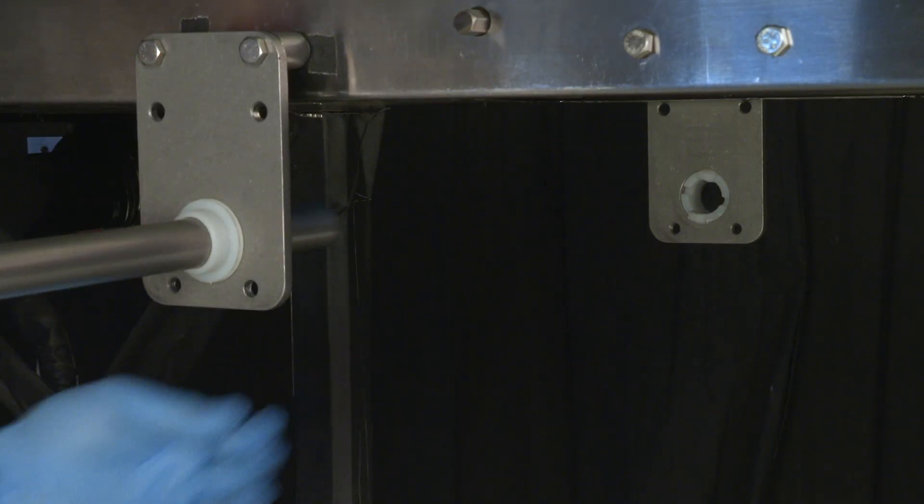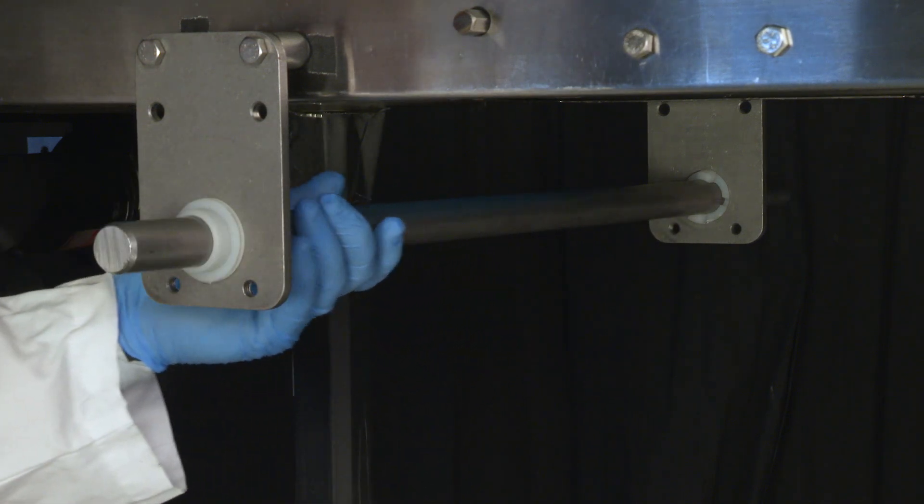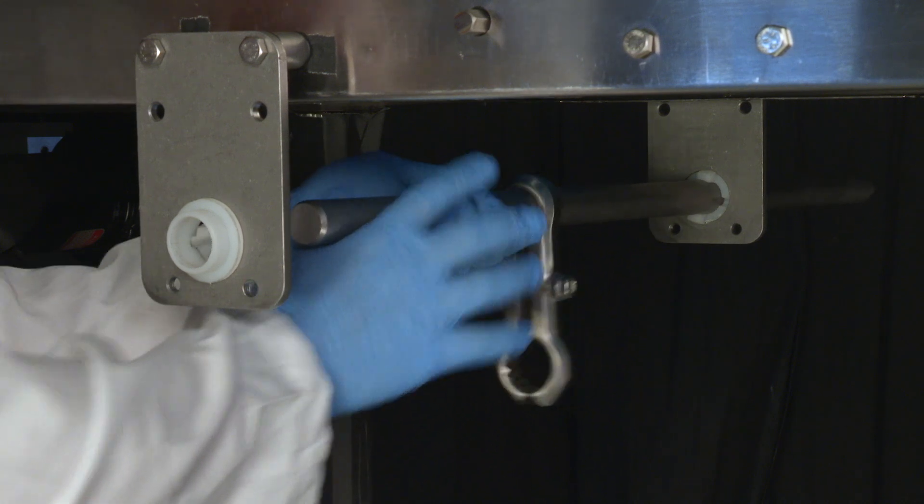Insert the metal shaft through the plastic bushing. Slide the reaction arms on the shaft.